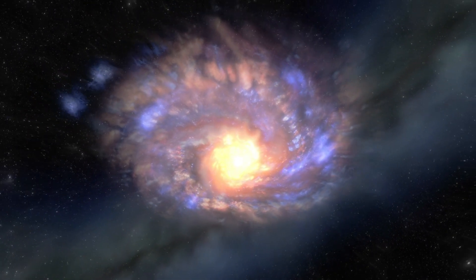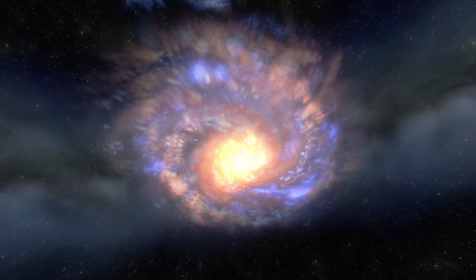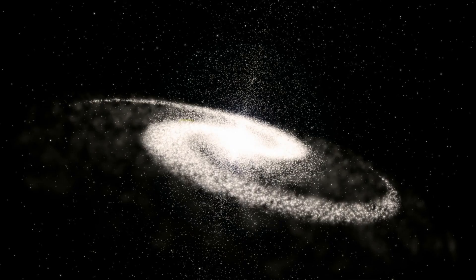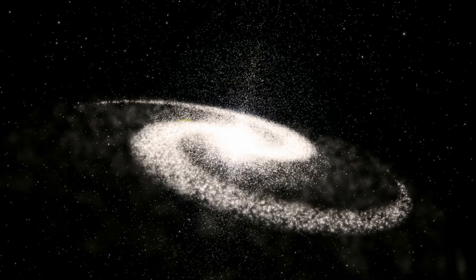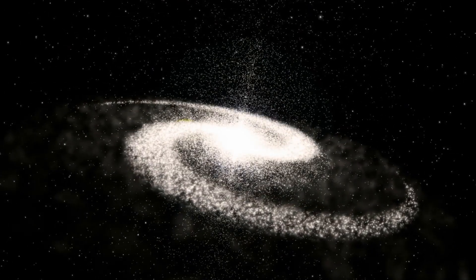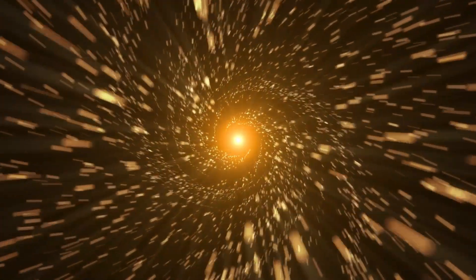Stars of this size typically go through a series of dramatic phases in their final years, undergoing massive internal changes before their cores collapse and trigger a massive explosion. Given its size and the instability currently being observed, it's believed that Betelgeuse could explode within the next 100,000 years. Though, as we've seen, astronomical events like these can sometimes occur much sooner or later than expected. The precision of this estimate is still a matter of debate within the scientific community.